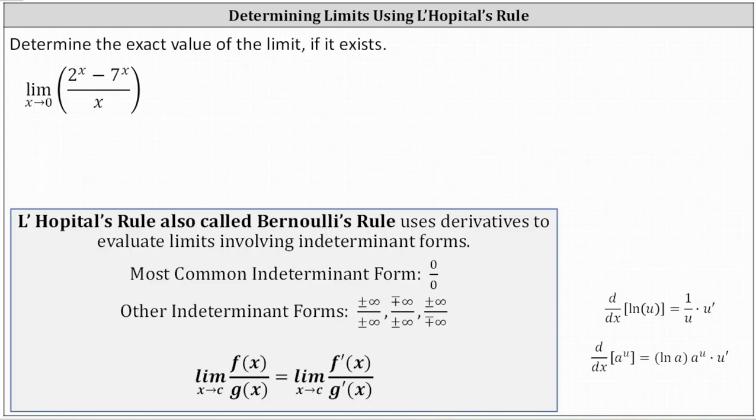Determine the exact value of the limit if it exists. We have the limit as x approaches zero of the difference of two to the power of x and seven to the power of x, all divided by x.